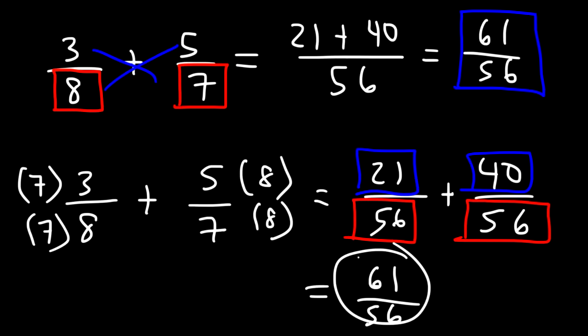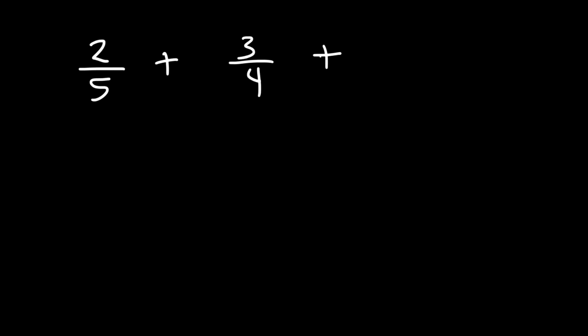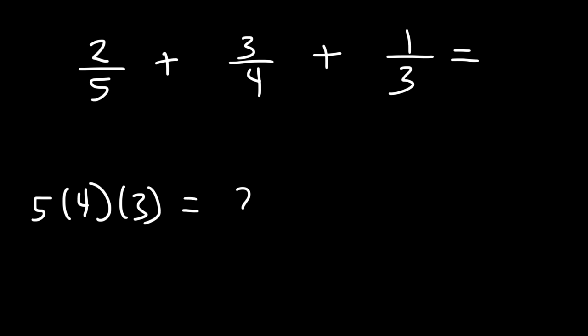This technique works when adding three or even four fractions. Let's try: 2 over 5 plus 3 over 4 plus 1 over 3. We need to find the least common multiple of 5, 4, and 3. A simple way is to multiply 5 times 4 times 3: 5 times 4 is 20, and 20 times 3 is 60. So 60 is a common multiple of 5, 4, and 3 — and it is in fact the least common multiple.